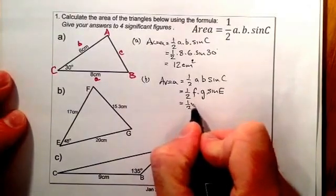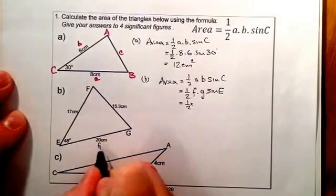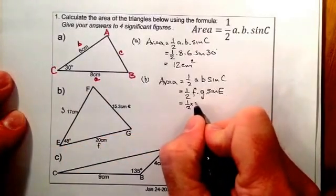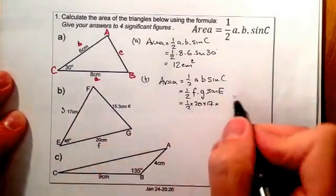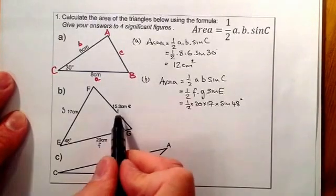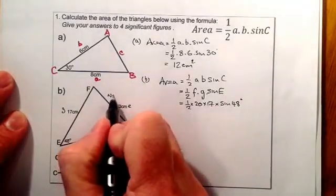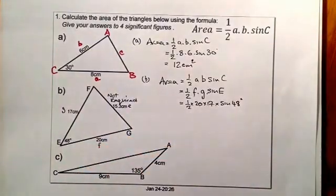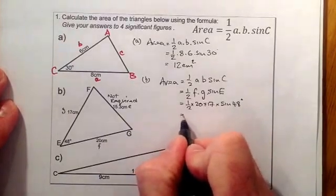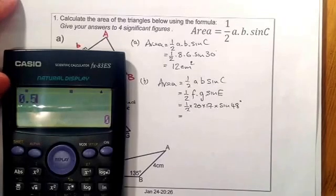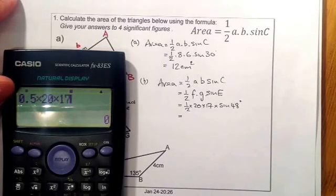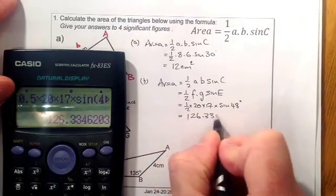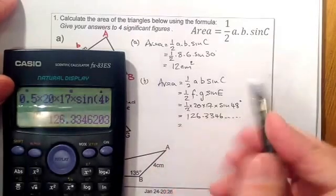Let's put our numbers in. F is 20, G is 17, and the angle E is 48 degrees. So that's half times 20 times 17 times sine 48 degrees. The third side is not required — we don't always need to use all the information given. On the calculator: 0.5 times 20 times 17 times sine 48 equals 126.3346... Rounding to four significant figures gives 126.3 square centimetres.